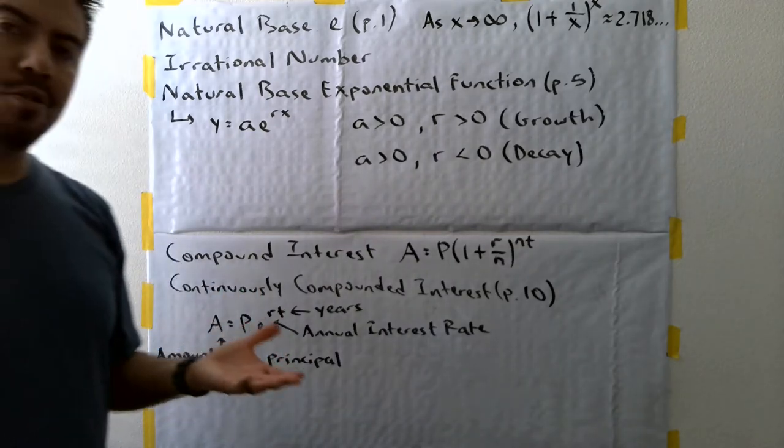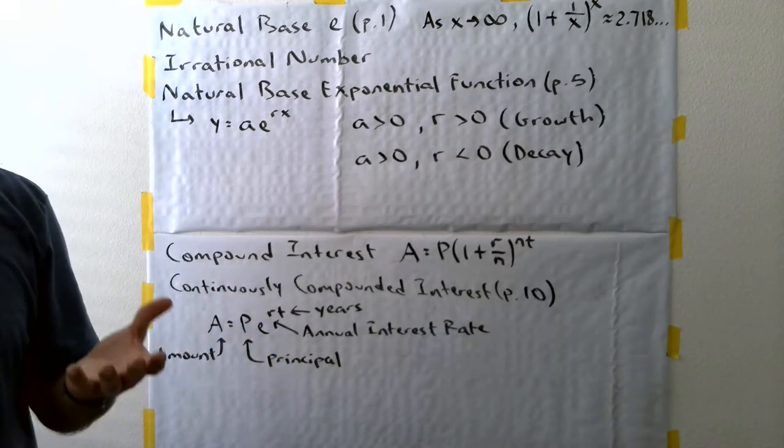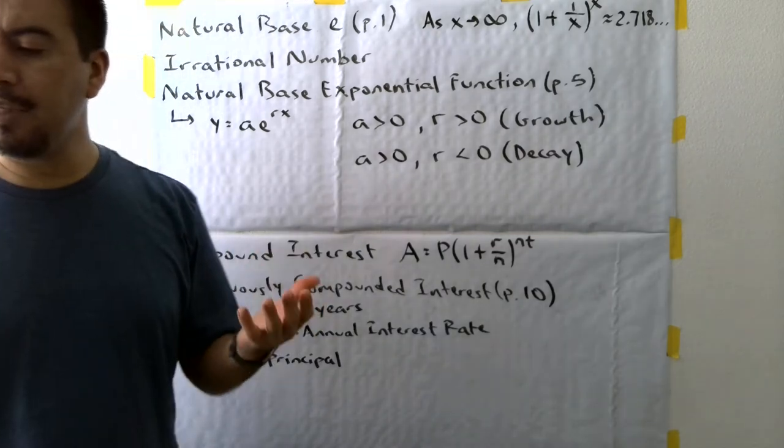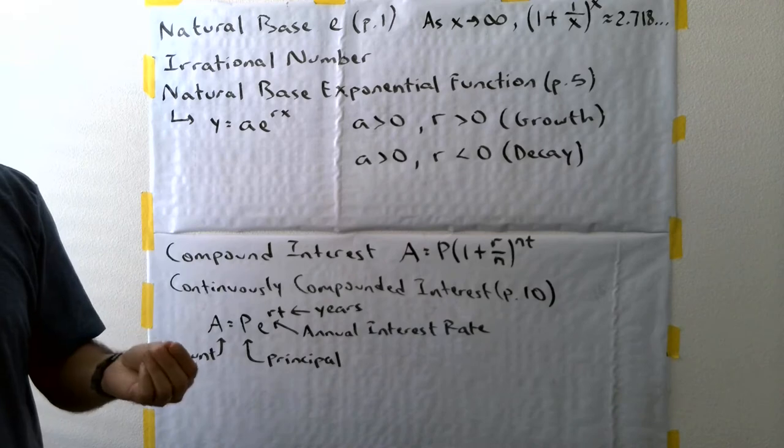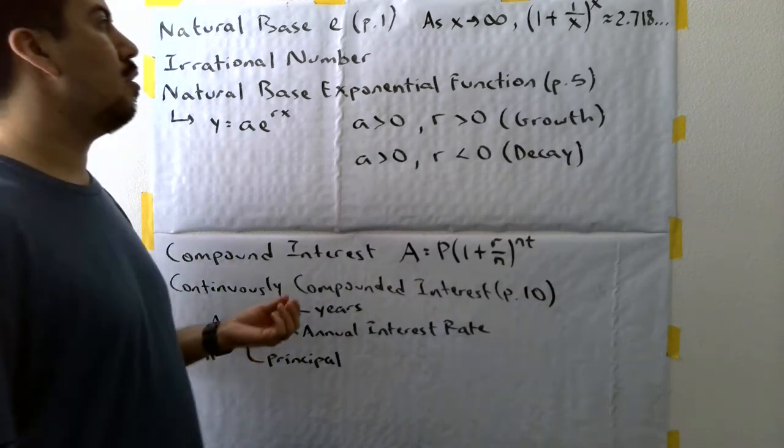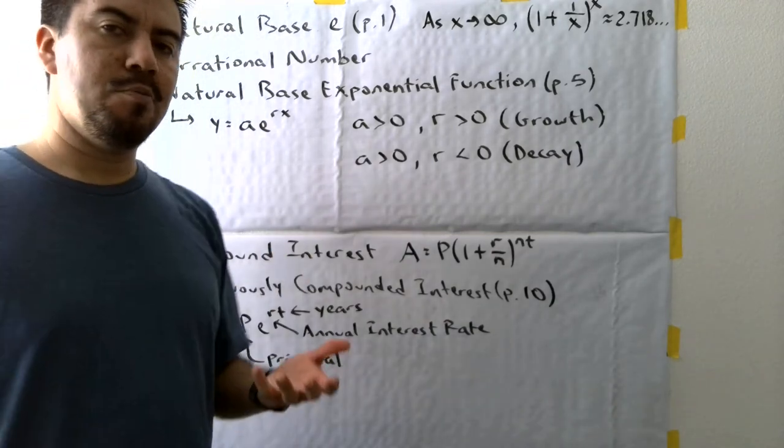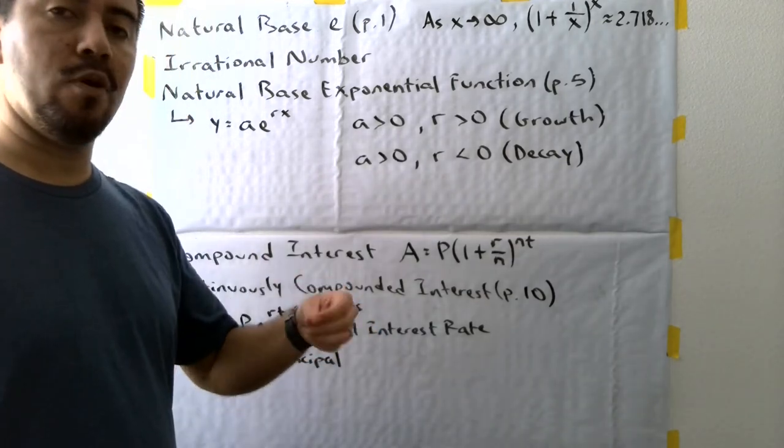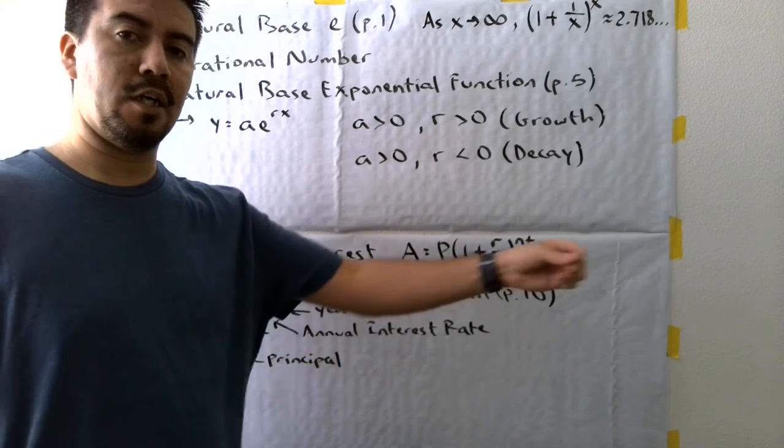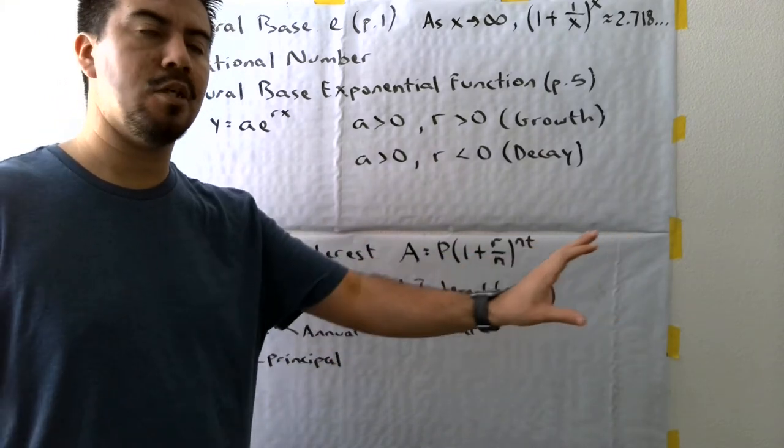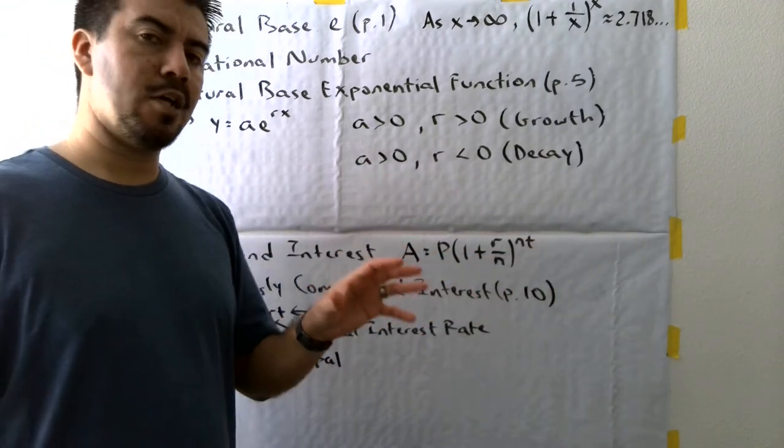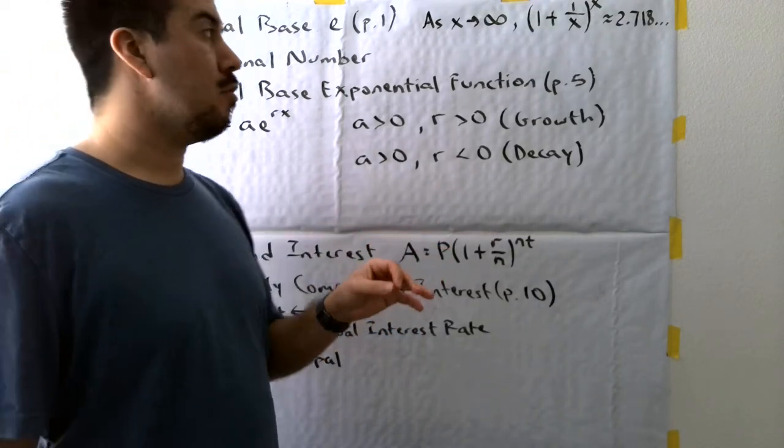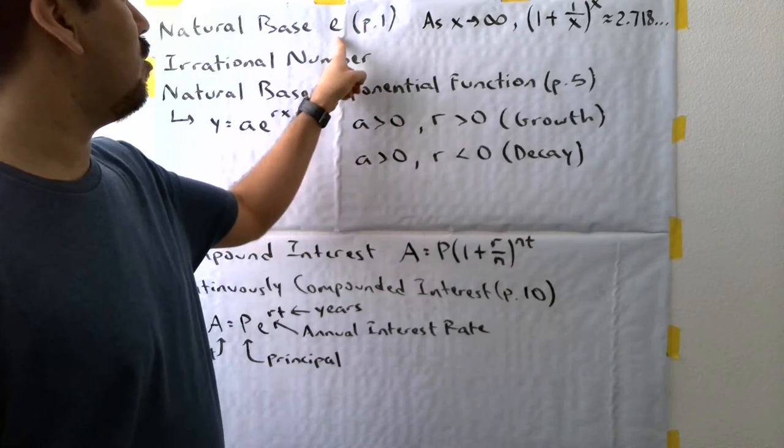Now you may be wondering, what's an irrational number? The definition of an irrational number, as opposed to a rational number, is a real number that can't be written as a simple fraction. One example of that would be the number pi. You would know that roughly as 3.14159 dot dot dot. That means it just goes continuously. There is no fraction that can actually represent the number pi identically with that value. And it's the same thing with the letter E.